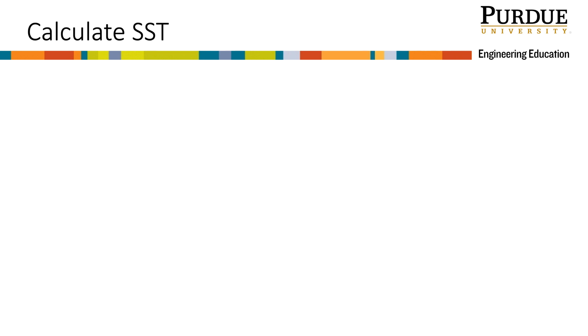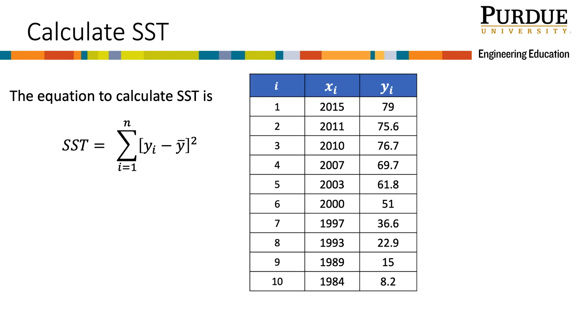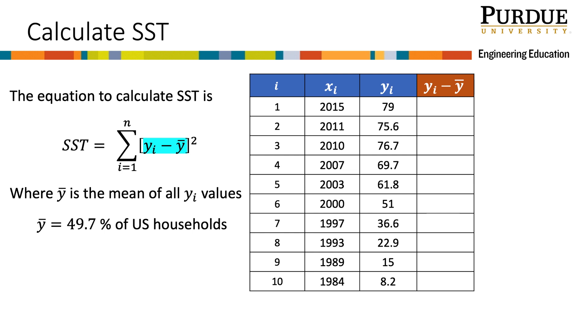Calculating SST is similar to calculating SSE. Looking at the equation for SST, we will also calculate this using a table, and x sub i and y sub i are the actual data points. First, we need to calculate y sub i minus y bar, and remember that y bar is the average of all the y sub i values, which we calculated earlier to be 49.7% of U.S. households.